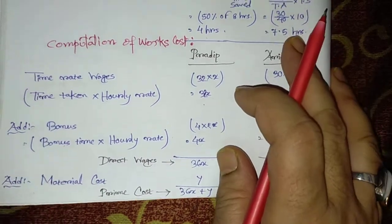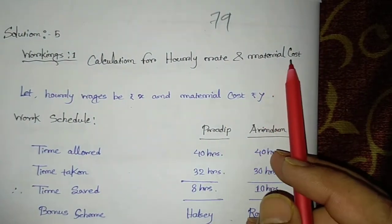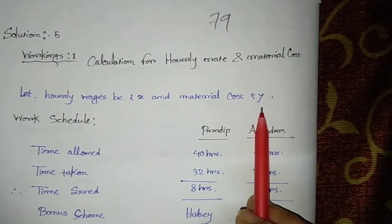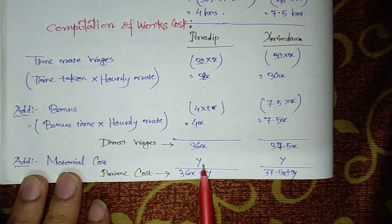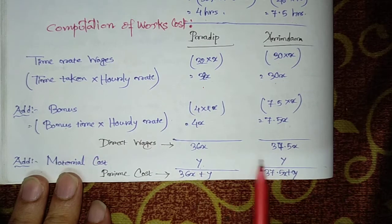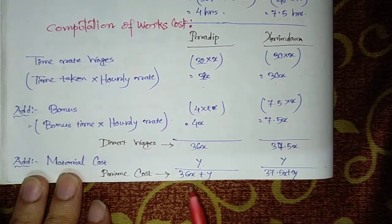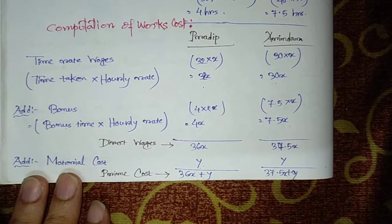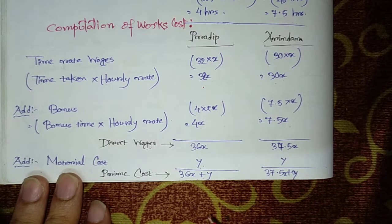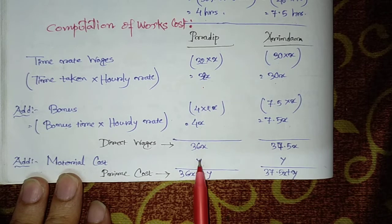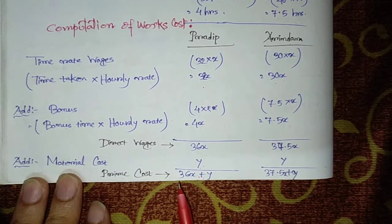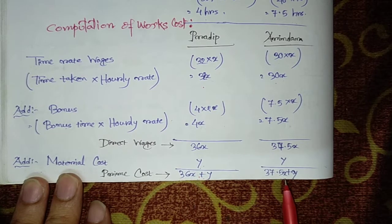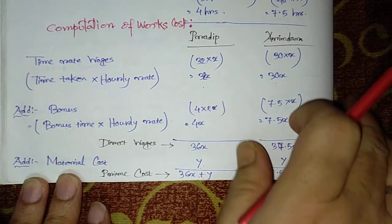Now, we have assumed that material cost was y. Therefore, now we are adding material cost. In both the cases, it is y. Material cost y and y in both the cases. Prime cost's formula is direct material plus direct wages plus direct expenses. There is no direct expenses. Therefore, material cost and direct wages should be added and we will get prime cost. In case of Pradeep, it will be 36x plus y. In case of Aurindam, it will be 37.5x plus y.